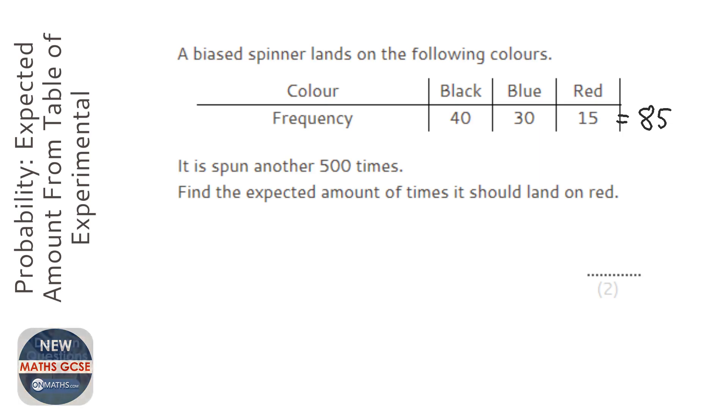With this information, we can work out the theoretical probability, or sorry, experimental probability of it landing on a red. Experimental probability is basically probabilities we get from doing experiments.